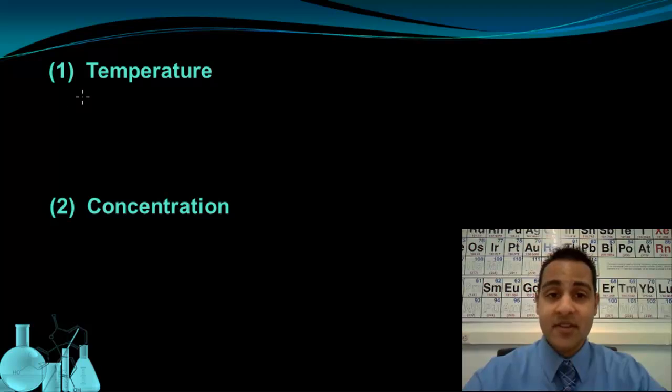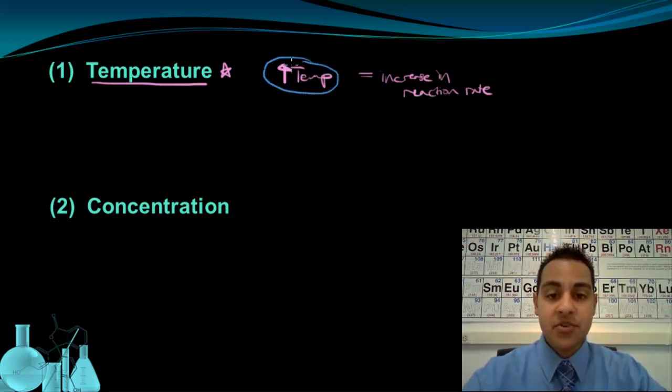Our first factor is temperature, and this is probably the most important one. Temperature is going to have the biggest effect on rate of reaction. More specifically, when we increase the temperature, the reaction rate goes up as well. So the question becomes, how does a temperature increase result in an increased reaction rate? Well, we know that an increase in temperature really means that the average kinetic energy of a sample is increasing, and this has two important consequences.